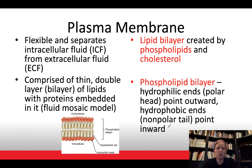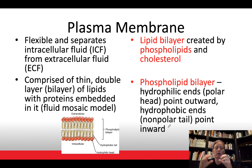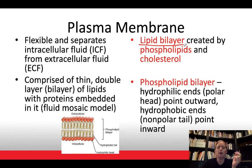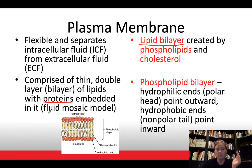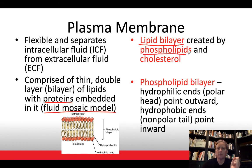The plasma membrane is a very flexible structure made up of a double layer of phospholipids called a phospholipid bilayer — two layers of phospholipids with proteins embedded in it. We refer to it as the fluid mosaic model because it's not a rigid structure. The lipid bilayer is created by phospholipids and also has a component of cholesterol, which helps give the bilayer structure.